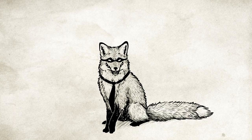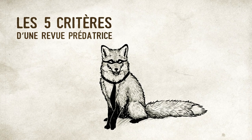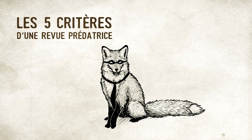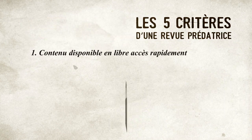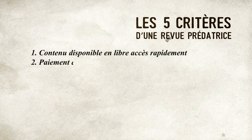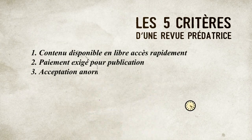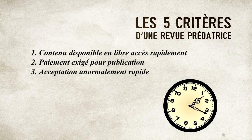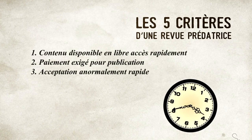Pour être caractérisée comme prédatrice, une revue doit répondre aux cinq critères suivants. Premièrement, le contenu de la revue est disponible en libre accès dès la publication. Deuxièmement, la revue exige un paiement pour publication. Troisièmement, l'acceptation du manuscrit est anormalement rapide.